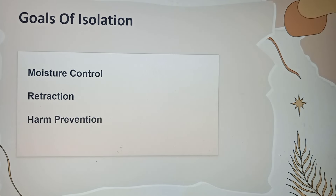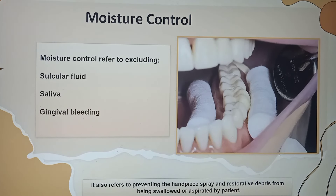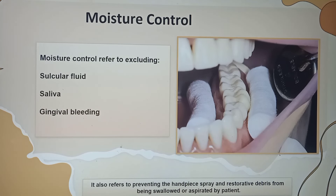Moisture control means proper exclusion of all the saliva present in the mouth at that particular area, or the crevicular fluid or gingival bleeding at that particular area, so that there is proper visibility and the tooth can be operated without much difficulty. As you can see here, moisture is controlled by placing cotton rolls.